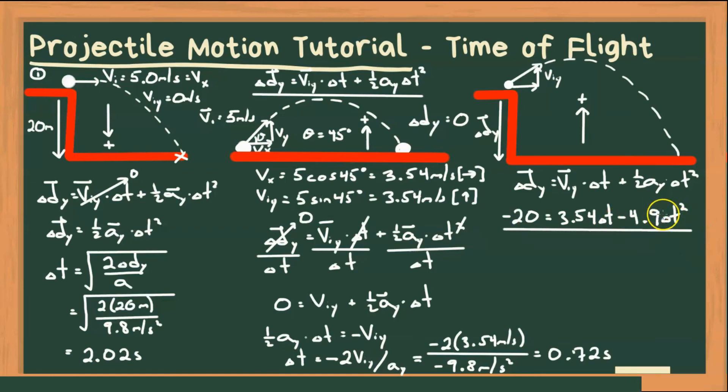If you still can't see it yet, let me rearrange by bringing these terms to the other side of the equation. When we do that, we get positive 4.9 times time squared minus 3.54 times time minus 20 is equal to zero. So here is our a coefficient. Here is our b coefficient. And there is our c coefficient in the quadratic equation where we would solve it as follows.